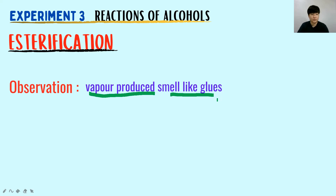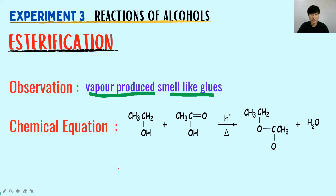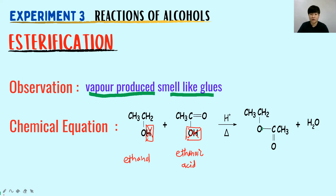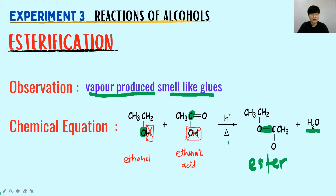The observation in esterification is based on smell — it produces a product that smells like glue, because we are using ethanoic acid and ethanol. In the chemical equation, the H from the alcohol is removed, and the OH from the carboxylic acid (ethanoic acid) is removed. When they combine, a new bond forms between the O (from alcohol) and the carbon that lost the OH (from the acid) — and that is your ester. The by-product is H₂O. That's it for the revision of experiment 2 and 3.